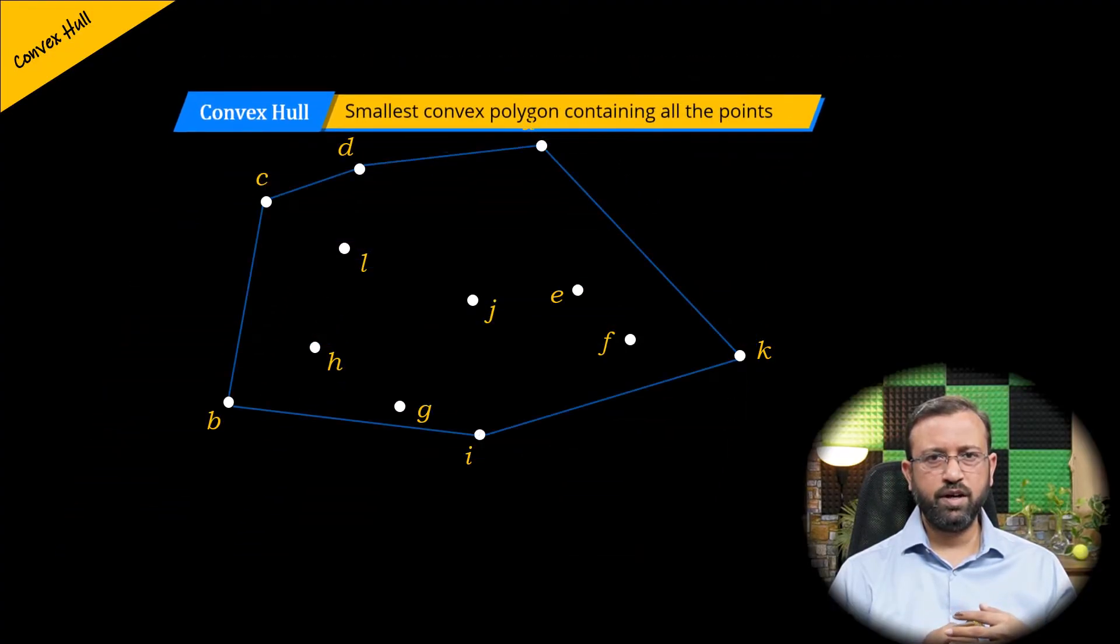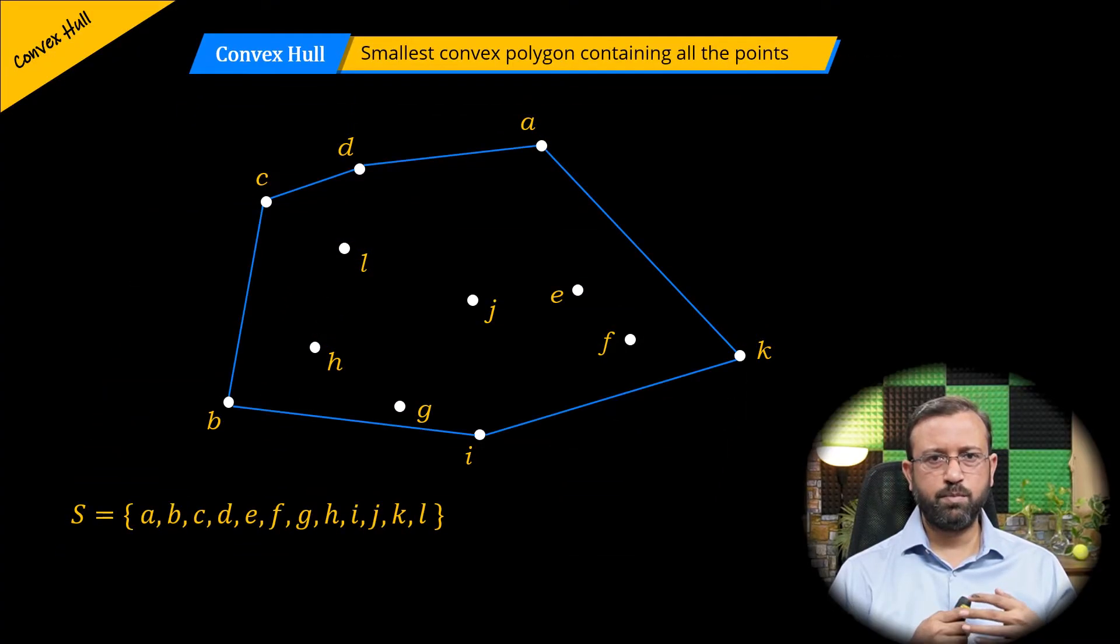So given a set S of n points in a plane, compute the convex hull CH of S, which is the smallest convex polygon that encloses all the points of S.